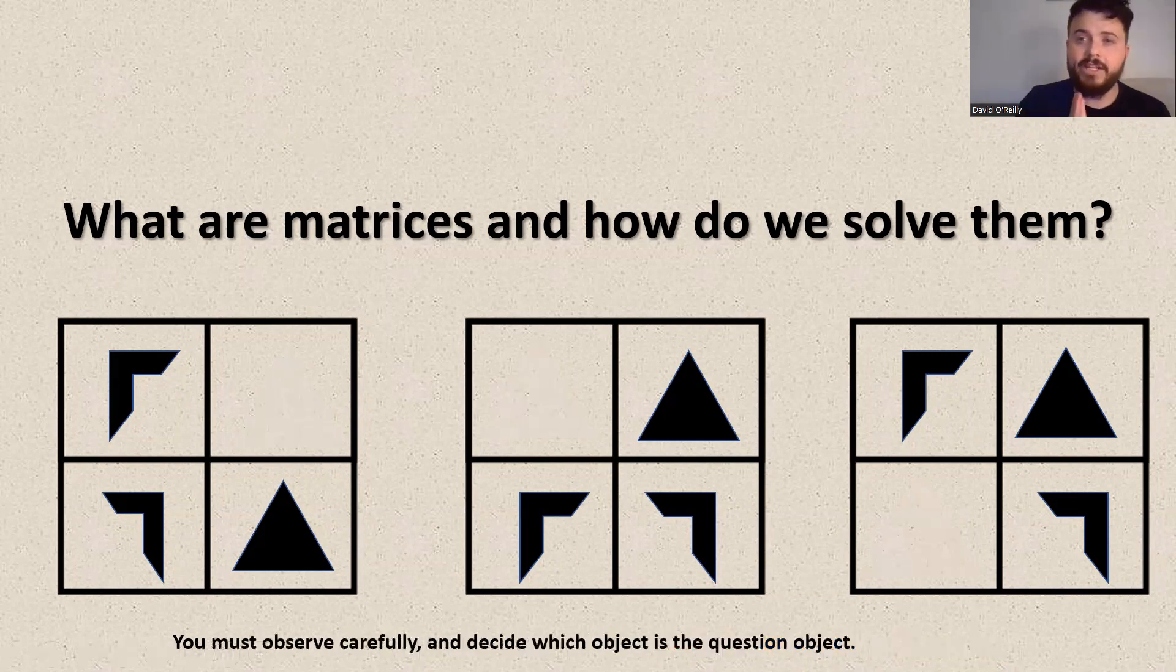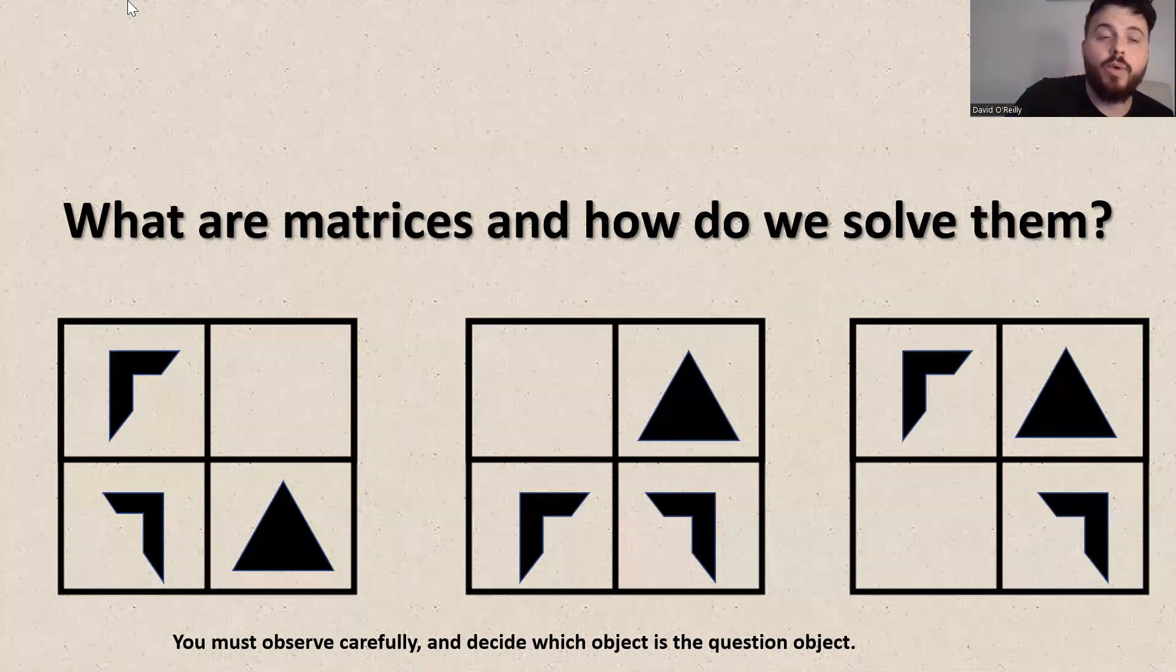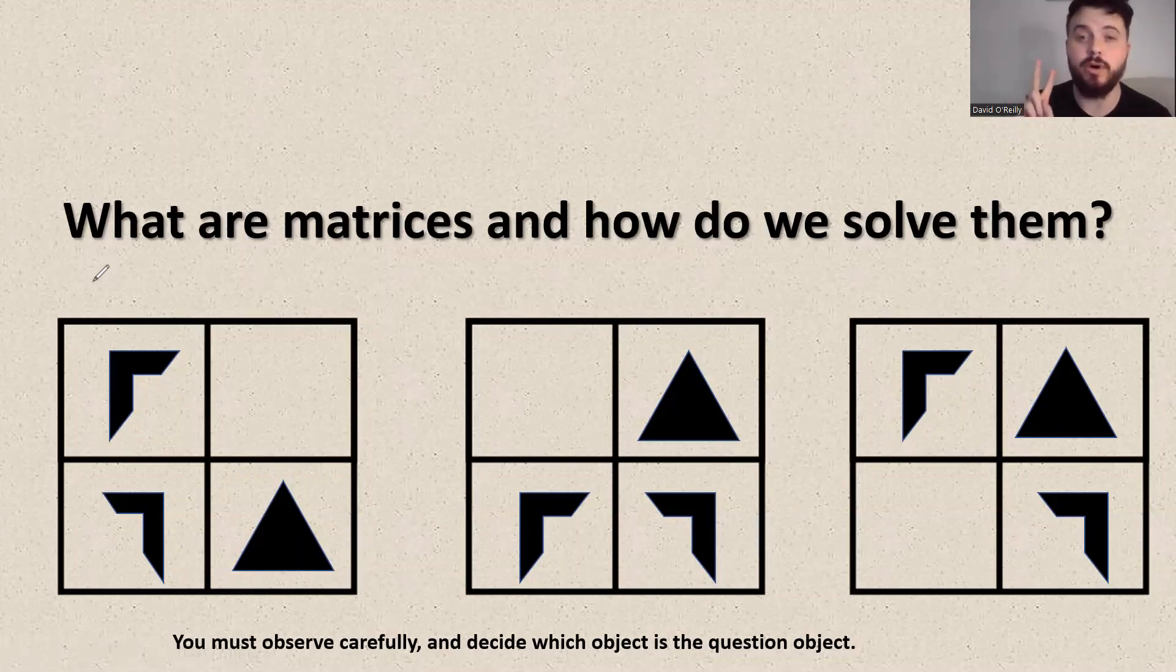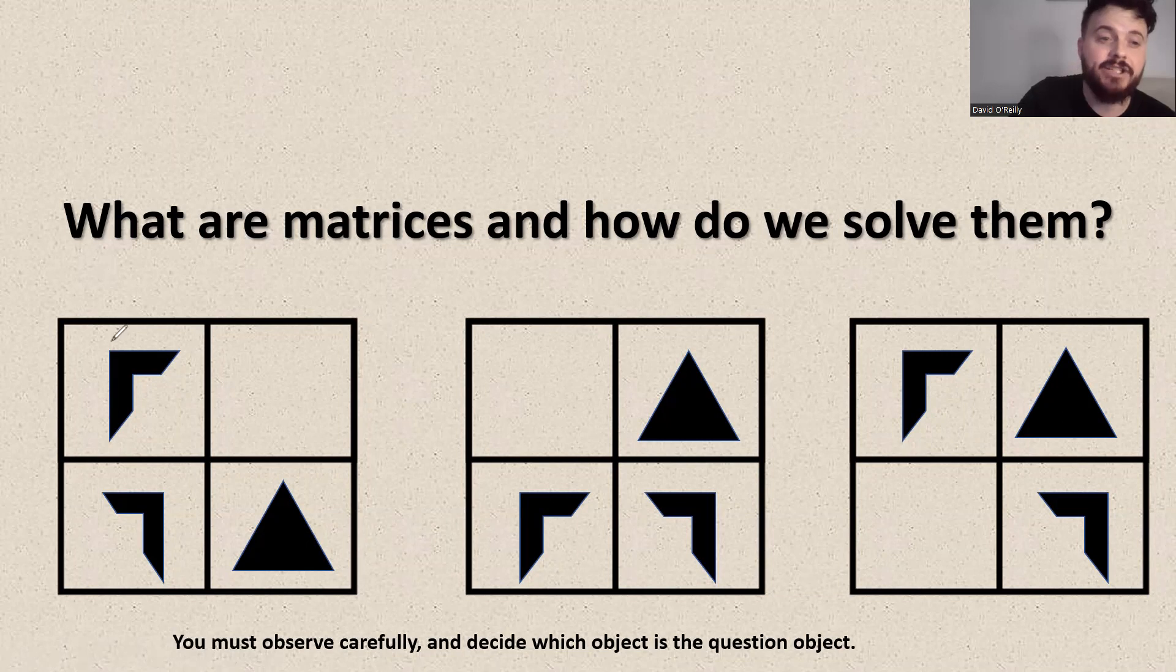So what we need to be able to do is we need to figure out what is the question? What is the object of the question? What object are we working with? So with matrices, we have a transition. We have a pattern change between two objects. And we know that in the first grid, the change has occurred between these two. So we know that the grid is working from top to bottom, vertically.